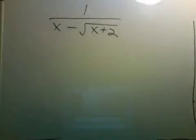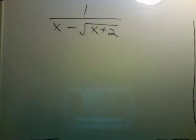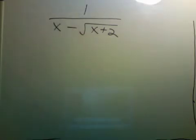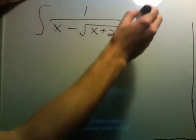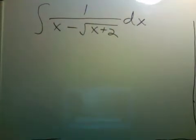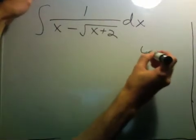The final topic in this section is rationalizing substitutions. So far, we've only been dealing with rational functions in this section. Here is a function that involves a radical, so this is not a rational function — it's not a polynomial. But it turns out we can turn this into an integral involving rational functions. The trick is just to substitute for the radical part. Sometimes you have to be a little clever, but this problem turns out to be particularly nice.